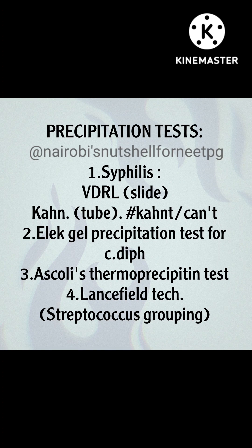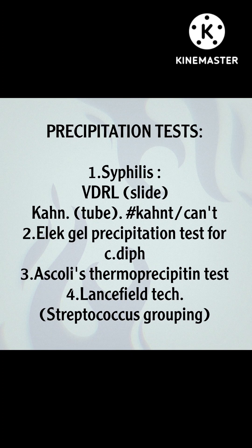Coming to the first type — precipitation test — the mnemonic is SEAL: S for syphilis, E for Alexigel precipitation, A for Ascolis, and L for Landsville. In Alexigel precipitation and Ascolis thermoprecipitin, the name itself has 'precipitation' in it. For syphilis, there are two types: VDRL test, which is slide flocculation, and Kahn's test, which is tube flocculation. The fourth one is Lancefield's technique for streptococcus grouping. This completes the four examples of precipitation tests — SEAL.